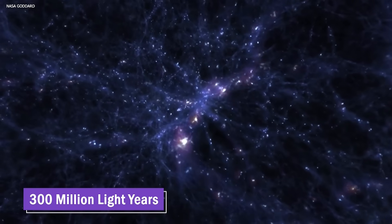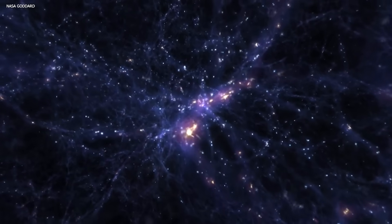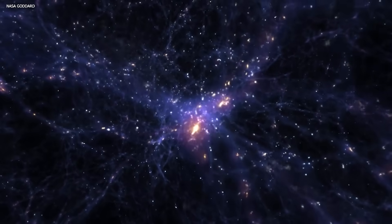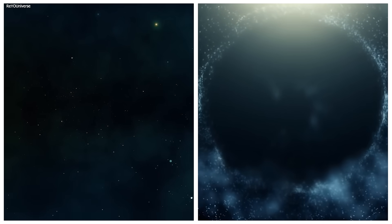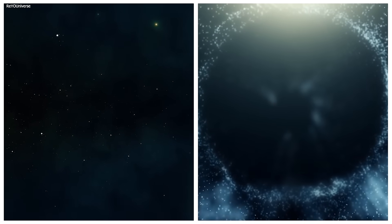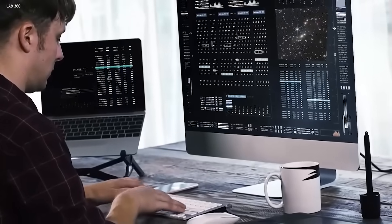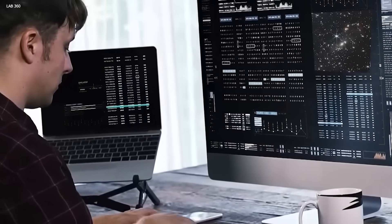Eridanus super void, where the great void is located, is a vast region that spans across almost one billion light years. The void itself is estimated to be around 300 million light years across, making it one of the largest voids in the universe. This void isn't completely empty, but it is incredibly sparse compared to other regions of space. Scientists have been trying to understand what could have caused the great void for years.